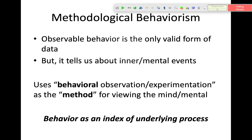This leads us to an important distinction between methodological and radical behaviorism. In methodological behaviorism, observable behavior is the only valid form of data. But in the methodological behaviorist world, that data tells us about inner or mental events — it uses behavioral observation or experimentation as the method for viewing the mind and those hidden processes thought to be at work. It treats behavior as an index of an underlying process. The methodological behaviorist really wants to study what underlies behavior and what causes it; behavior is just the output of something else.